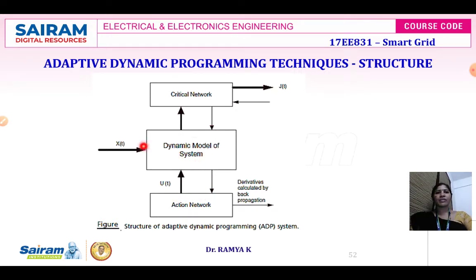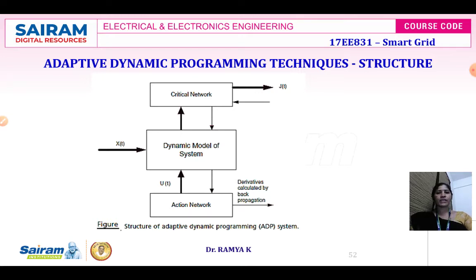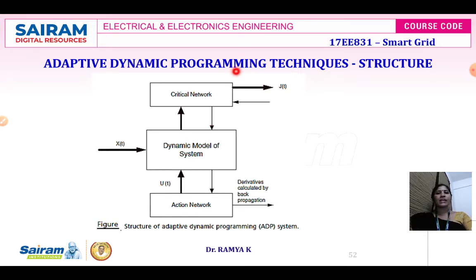The input to the dynamic model is x(t), and the input for the critical network will generate the function j(t). The action network gives the derivative calculated by the back propagation algorithm. We will be using artificial intelligence programming, specifically the back propagation technique.